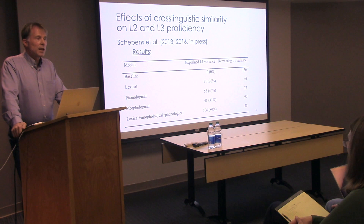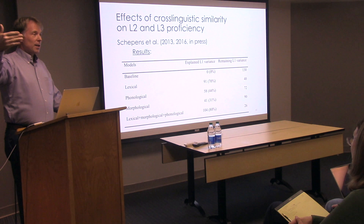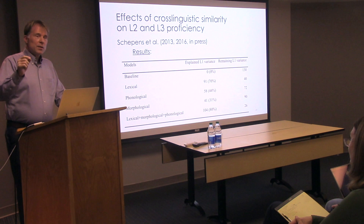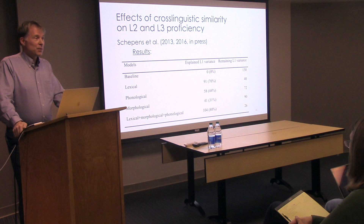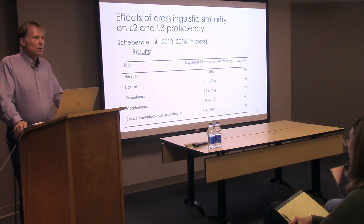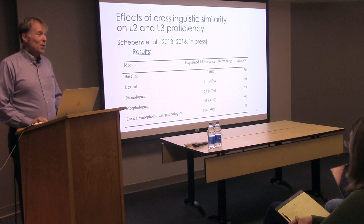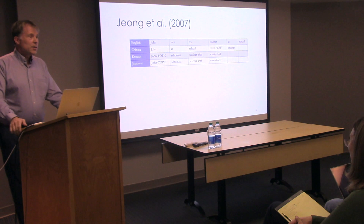In his 2016 study, he also took into account that most learners were learning Dutch as an L3, not an L2. He found that the effects of similarity between the L2 and Dutch was not quite as strong as L1-Dutch similarity, but still quite strong. When you add those effects together, you can predict at very high levels of accuracy how well a person is going to be able to learn a language. Cross-linguistic similarity is very, very important, no question about it.